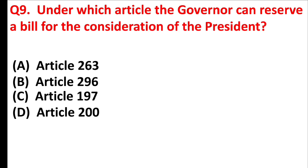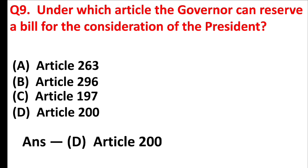Under which article can the governor reserve a bill for the consideration of the president? Answer is Option D: Article 200.